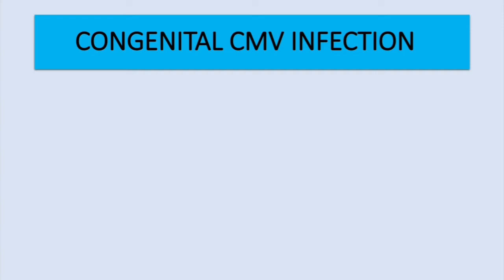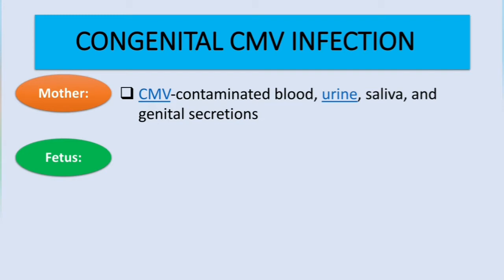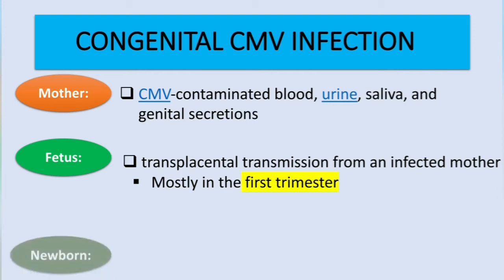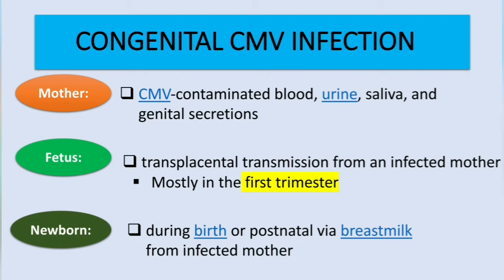In the previous video we discussed CMV infection in general. In this video we are going to focus on congenital CMV infection. The mother gets this virus mainly through CMV-contaminated blood, urine, saliva, and genital secretions. The fetus gets CMV through transplacental transmission from the infected pregnant mother, with the risk being highest in the first trimester. The newborn gets CMV mainly during birth or postnatally via breast milk from the infected mother.